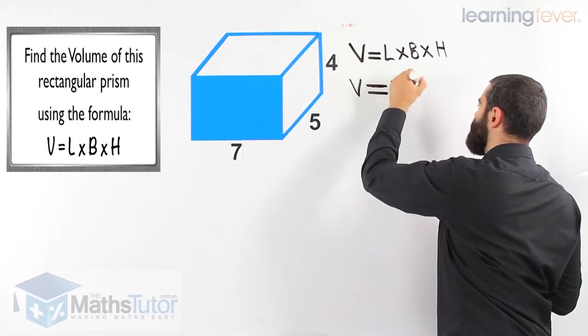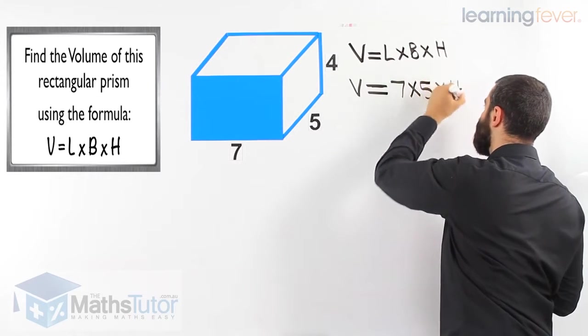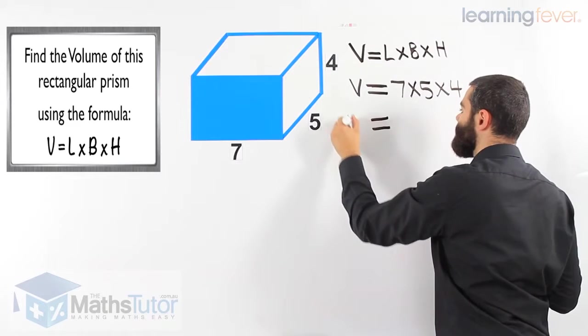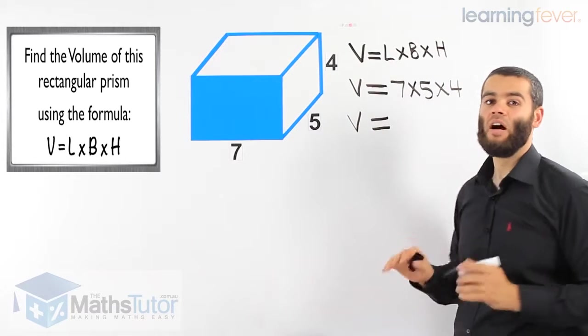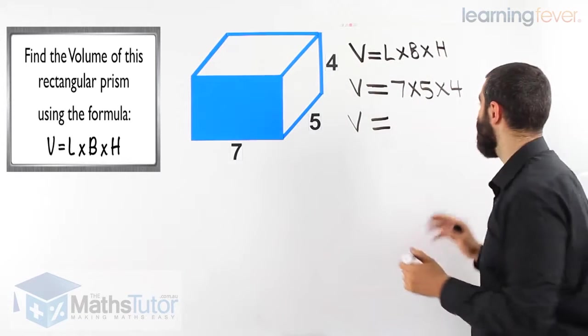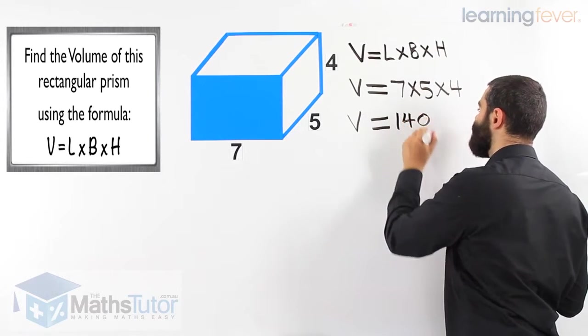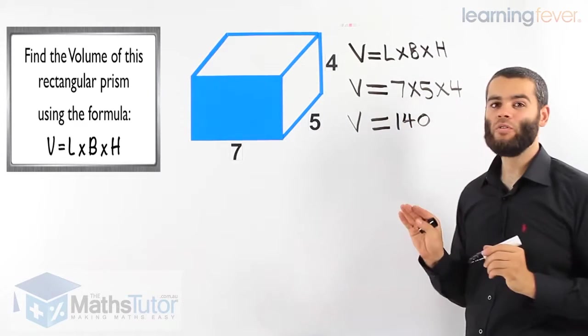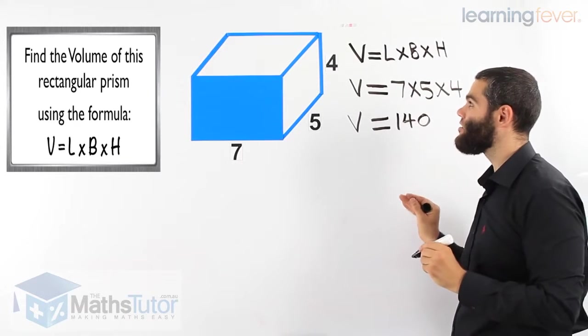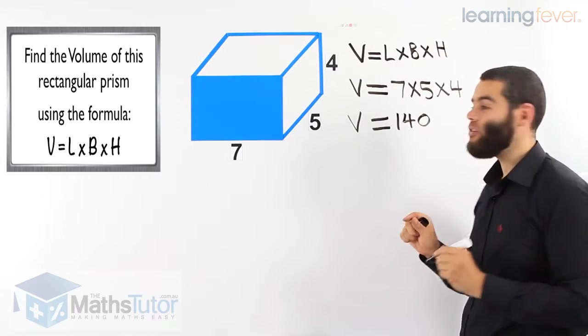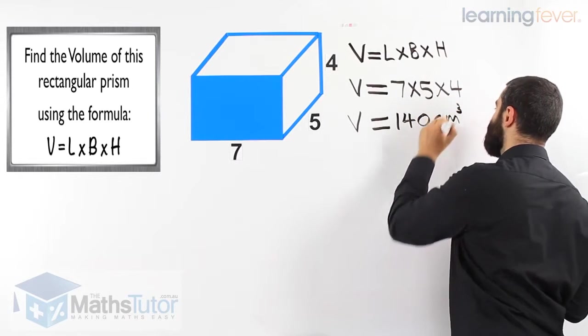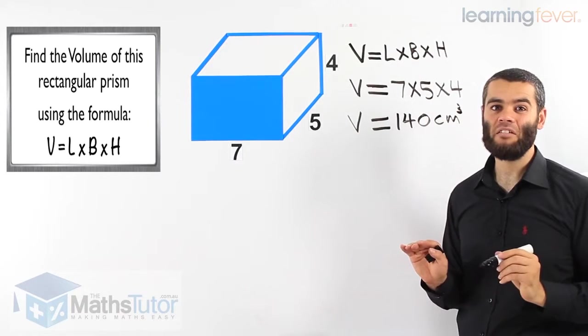Seven times five times four. Seven times five is thirty-five. Thirty-five times four, a hundred and forty. Now what are we going to write? It is in centimeters, so we have to write centimeters cubed or cubic centimeters.